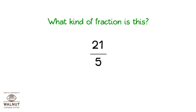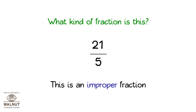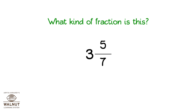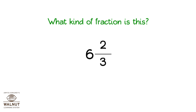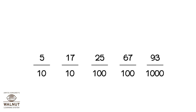What kind of fraction is 21 upon 5? The numerator is more than the denominator — this is an improper fraction. What kind of fraction is 3 and 5 upon 7? We have an integer and a fraction together — this is a mixed fraction. What kind of fraction is 6 and 2 upon 3? We have an integer and a fraction together — this is a mixed fraction.